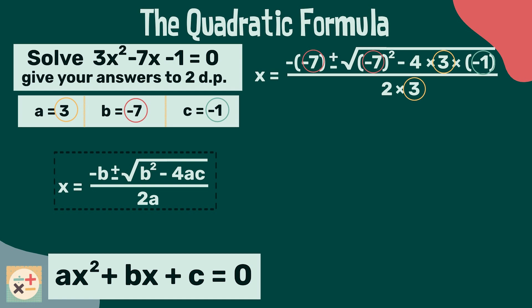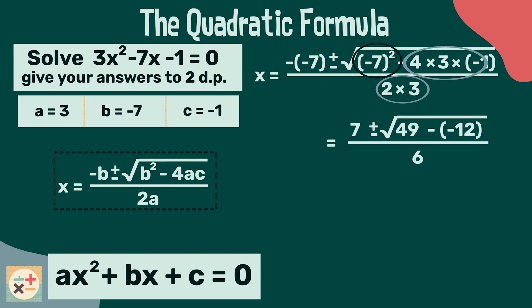Next let's simplify the equation by working through the multiplications. When squaring b in this instance we are squaring the minus 7 not just the 7. Again here, we are left with 49 take away minus 12. The sign rules tell us that two minuses make a positive, so we can change this.